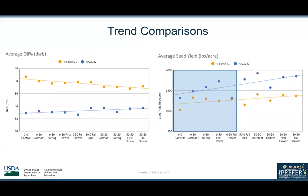One interesting discovery made by this study is that golden Pennycress and wild-type Pennycress appear to react differently to nitrogen applications. Compared to the control, any nitrogen application appears to have a negative effect on TT8 oil content, while ARV2032 shows that there is a positive effect on oil content with any nitrogen treatment.